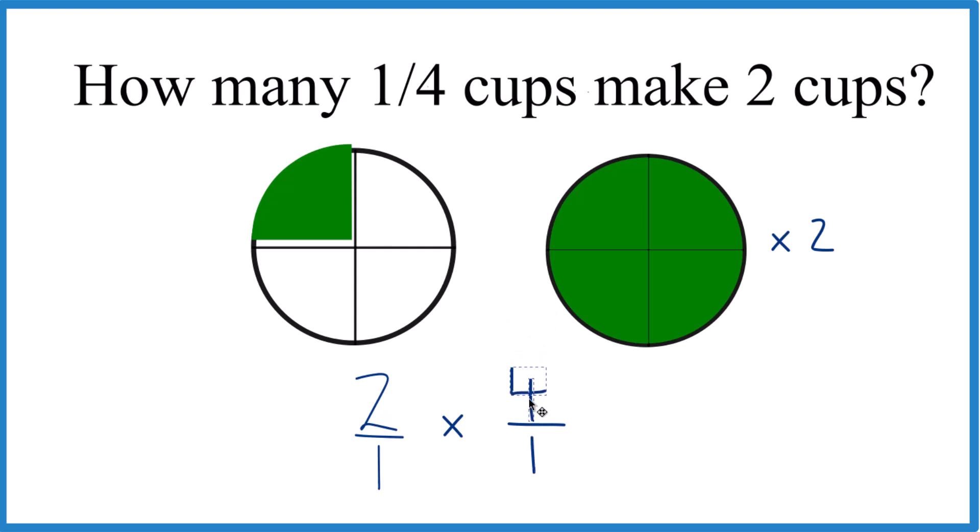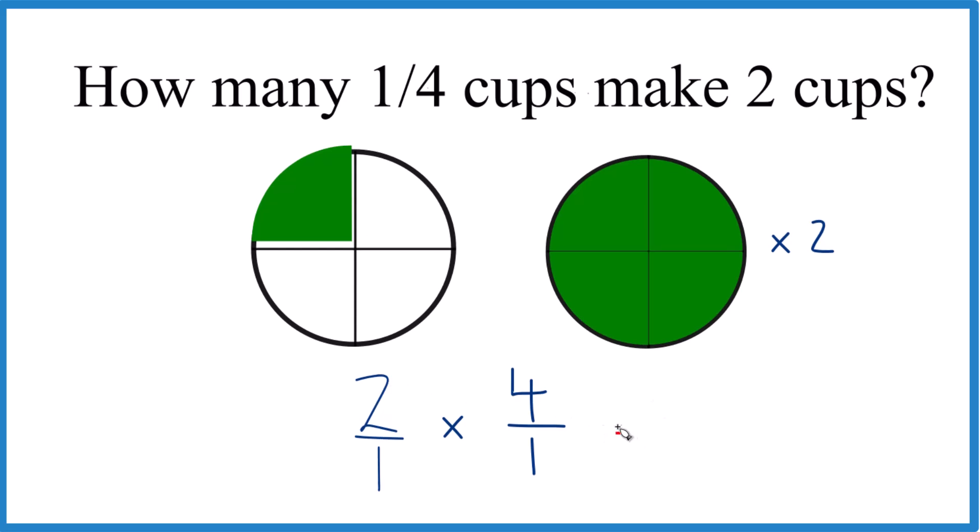And now it's a lot easier to multiply because we just multiply the numerators. Two times four is eight, and then the denominator is one times one is one.